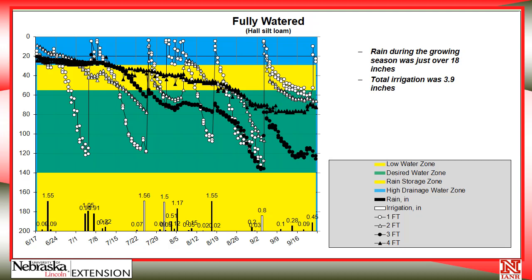Looking at a real field chart using this technique, the white triangles representing the second-foot sensor got down to about 80 centibars before the first irrigation was applied. After irrigation, both the top foot and second foot got very wet very quickly — a sign that water slipped down along the sensor — but dried back to the 40-50 range within a day or so. The black circles representing the third-foot sensor also began to dry down, which is exactly what we want: using deeper water earlier in the season so it's consumed by crop maturity.